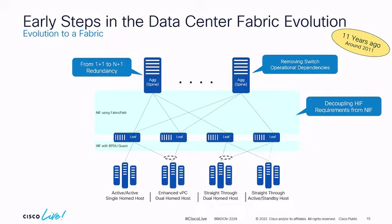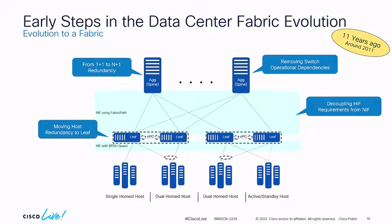Another benefit was decoupling HIF from NIF. Previously, with a tightly coupled arrangement between parent and child switch, a change in one place affected the other. Now individual switches at all locations provide much better protection and isolation from configuration errors. Controllers have also evolved to solve CLI-based erroneous changes that often take networks down. The next step introduced VPC at the leaf for an additional layer of redundancy while still running Fabric Path.